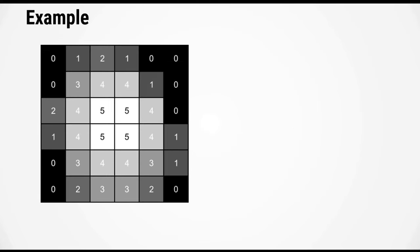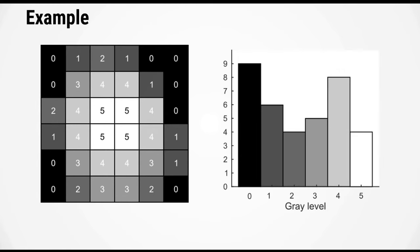We're going to see how Otsu's method works by using an example. Here on the left, we have an example image with six gray levels labeled from 0 to 5. If we compute the intensity histogram for this image, we will get a histogram that looks something like this.